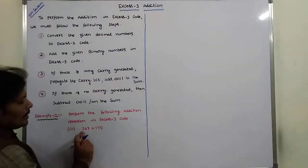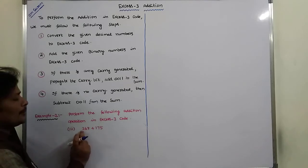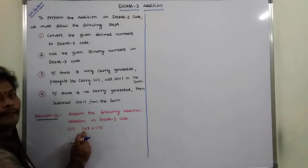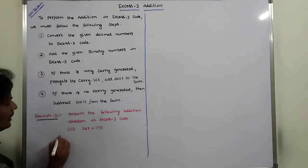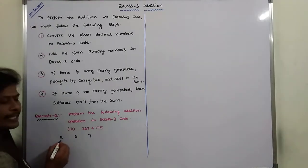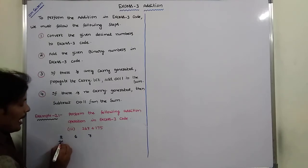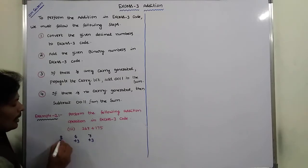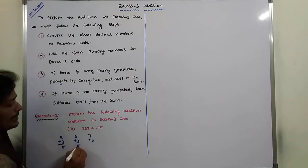Here in this given decimal number, there are three digits. To get the equivalent XS3 code, we have to add plus 3 to each and every digit. The digits are 2, 6, and 7. So: 2 plus 3 is 5, 6 plus 3 is 9, and 7 plus 3 is 10.